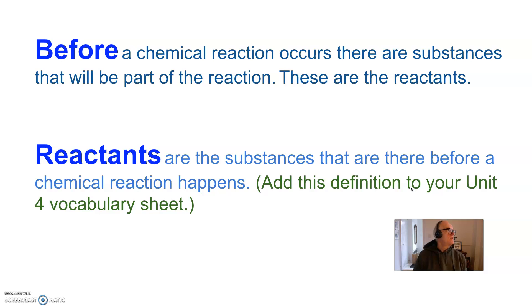Before a chemical reaction occurs, we have some substances that will be part of the chemical reaction. These are called the reactants. Reactants are the substances that are there before a chemical reaction happens.